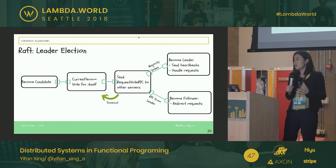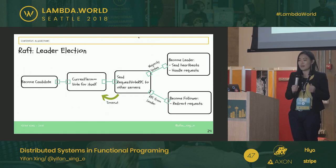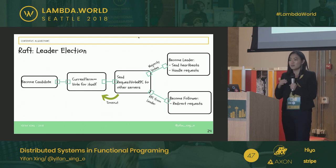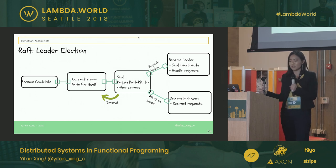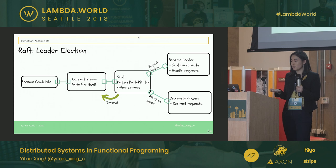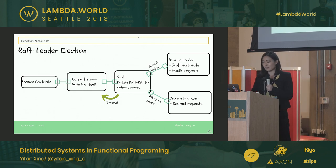Three things could happen. If everything works well and we get a majority of responses, we become a leader and start sending heartbeats to other machines while handling client requests. But if during vote gathering we receive a heartbeat from a leader, that means someone has already become a leader, so we step down as a follower and redirect client requests to the leader. A third case is a split vote scenario where two machines each get fewer than a majority of votes — they will timeout and restart the election.